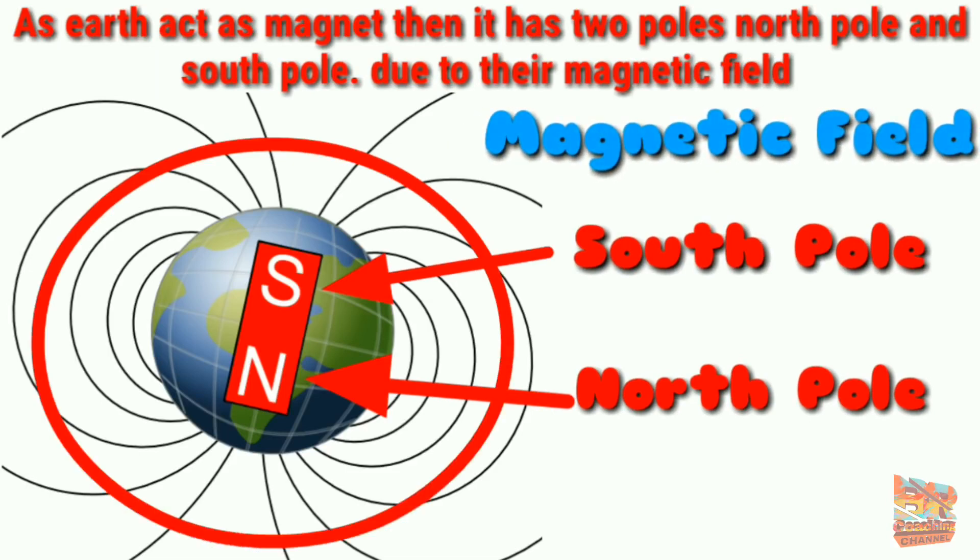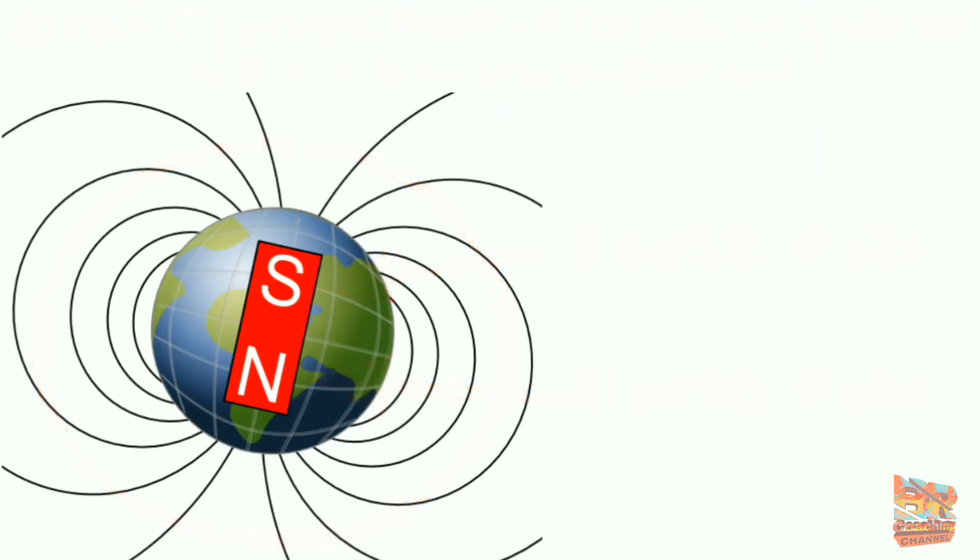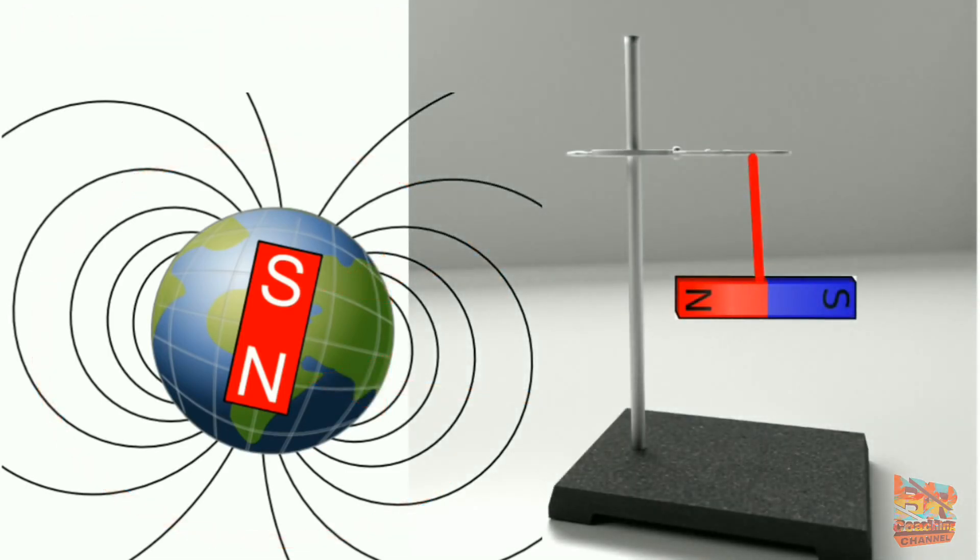Due to their magnetic field, so when we suspend a bar magnet, the north pole of the bar magnet attracts to the south pole of the earth's magnet.